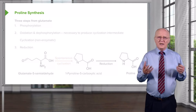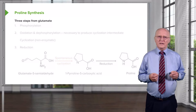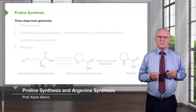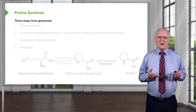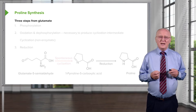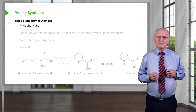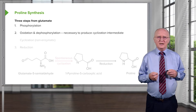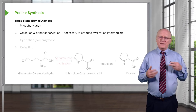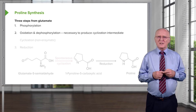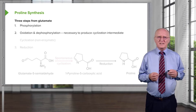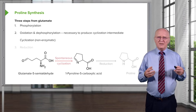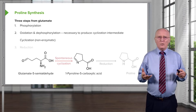The next amino acid we consider in biosynthesis is proline. Proline is made in a relatively simple fashion in three steps starting from glutamate. The first step involves the synthesis of glutamate 5-semialdehyde, which is not shown here. The next step is the phosphorylation of glutamate 5-semialdehyde — that oxidation and dephosphorylation is necessary to produce a cyclization intermediate, as seen on the screen.